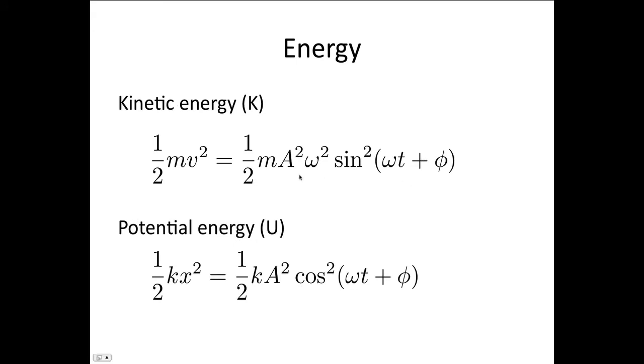We know that kinetic energy is equal to 1/2 mv squared. And we've shown that v is equal to ωA sin(ωt + φ). So just substituting that expression in for v, we end up with this expression for our kinetic energy. And the potential energy stored in the spring is given by 1/2 kx squared, which is 1/2 kA squared cos squared(ωt + φ). This is just substituting in for our x.